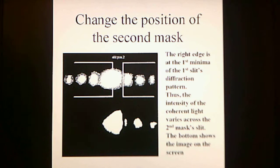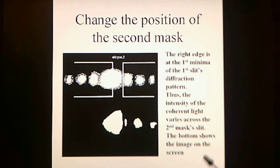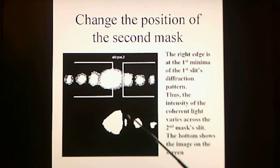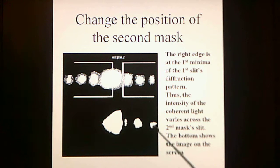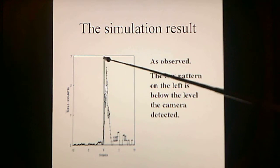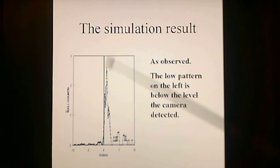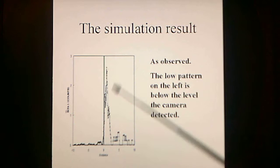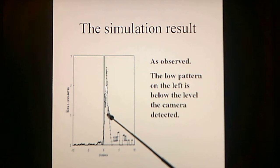The second part of the experiment changes the position of the second mask so that one edge of the slit is over the central peak and the other edge is over the first minima. The result on the screen shows the maxima slightly to the right of zero, declining as it goes left. There is a small spur that is actually part of the central maxima, and two secondary peaks. The center of the experiment at zero is visible, with the peak to the right of zero declining to the left, the spur corresponding to the central peak, and the two secondary maxima.